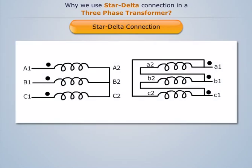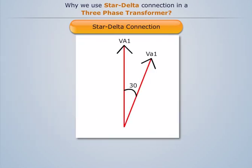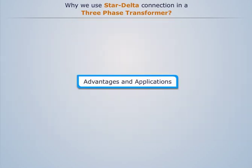The voltages on primary and secondary sides can be represented on the phasor diagram. There are a number of advantages and applications of this star-delta connection.